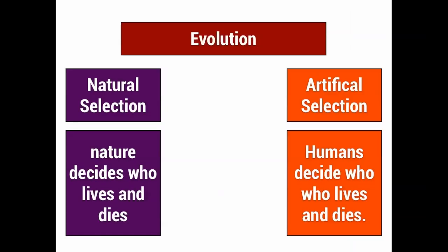In other words, natural selection is when nature decides who lives and dies, and artificial selection is when humans decide who lives and dies. In nature, it's decided based on whether they can survive in the wild, and in artificial selection, we usually choose based on some kind of human characteristic — like we think it's cute or we like it in our yard. And that is your introduction to natural versus artificial selection.